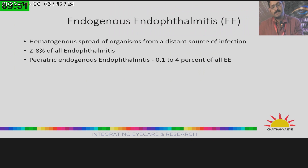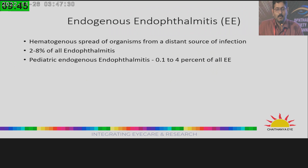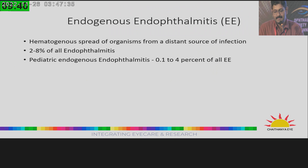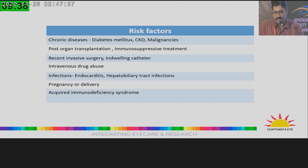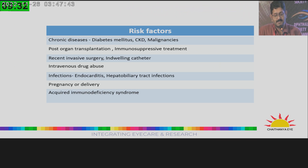Endogenous endophthalmitis occurs from hematogenous spread of organisms from a distant source of infection. It accounts for about 2–8% of all endophthalmitis. Paediatric endogenous endophthalmitis is even rarer. Risk factors include chronic diseases, patients on chronic immunosuppressive therapy, and intravenous drug abuse.